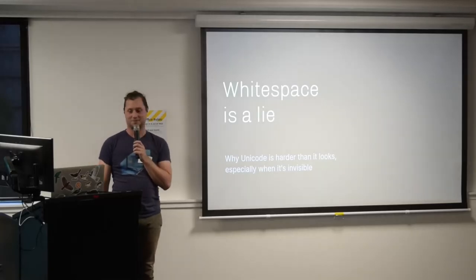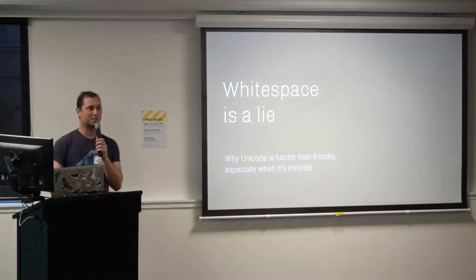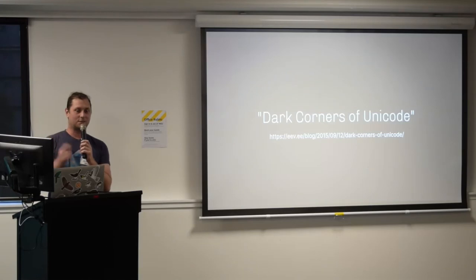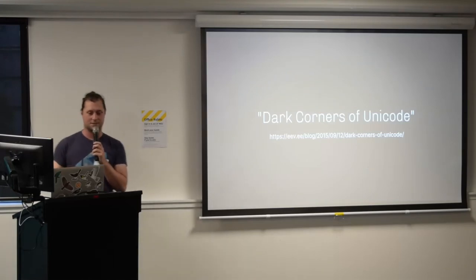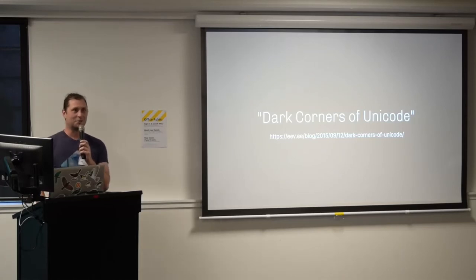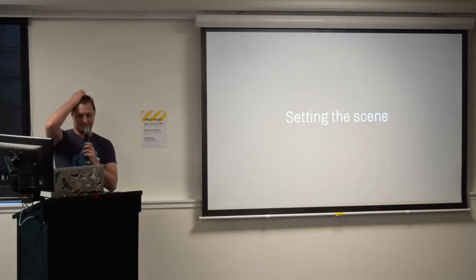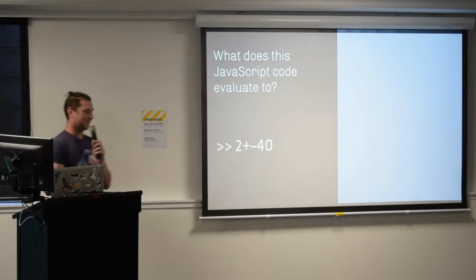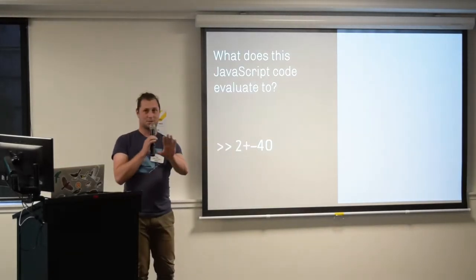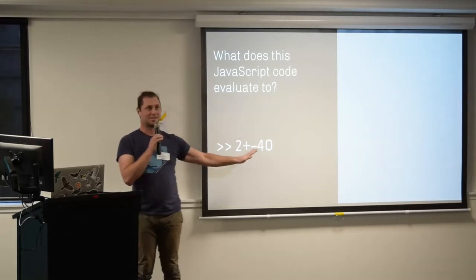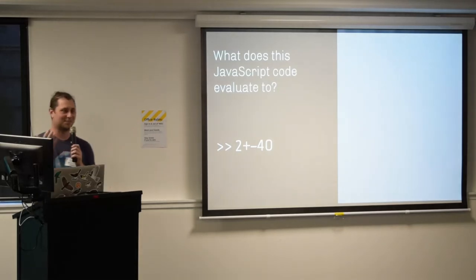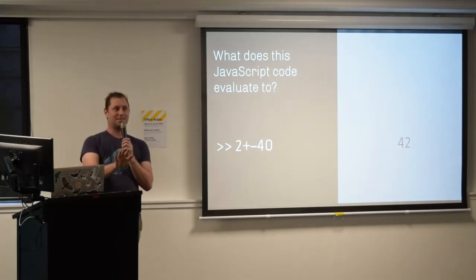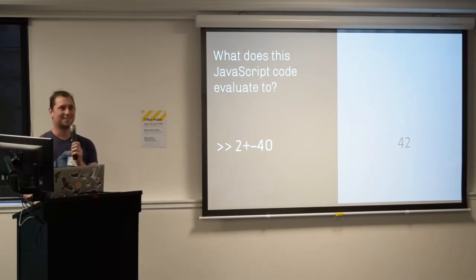My talk is entitled 'White space is a lie: why Unicode is harder than it looks, especially when it's invisible.' A lot of the research comes from a blog post from a few years ago. In JavaScript — everyone's favourite programming language — if you were to copy and paste a certain expression, what does it evaluate to? It's obvious right? No — it will evaluate to 42. Just ponder how this could be the case.